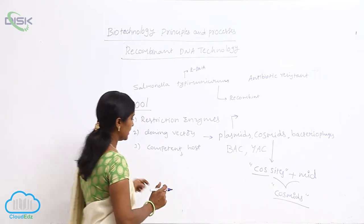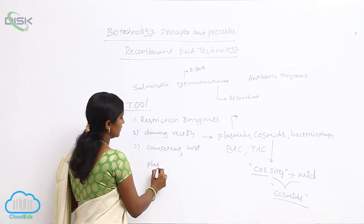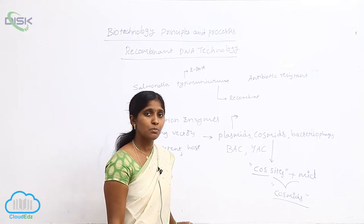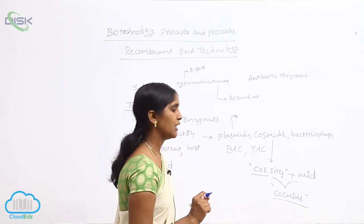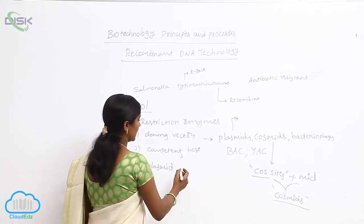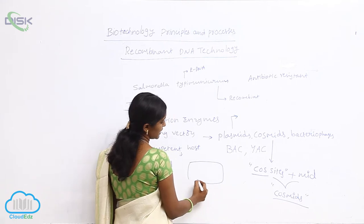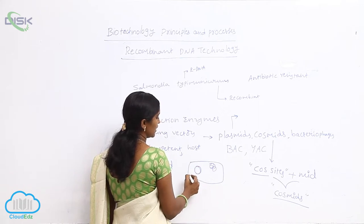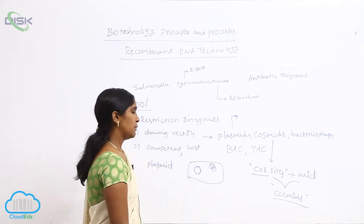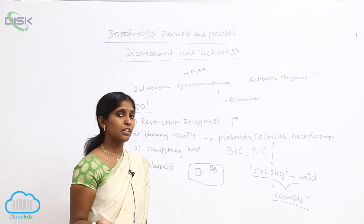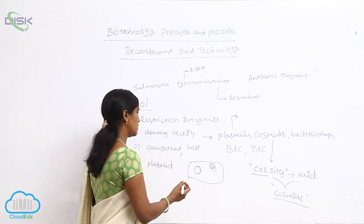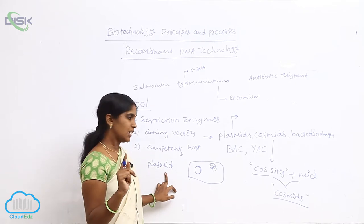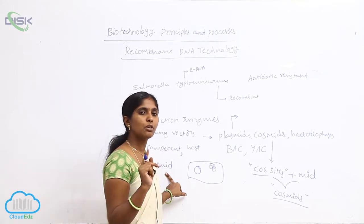A plasmid is a double-stranded circular DNA which is an extranuclear chromosome found in bacteria. In the bacterial cell, the nucleoid is present, and along with the nucleoid, the plasmid — the extranuclear chromosome — is also present. The number of plasmids varies from bacterium to bacterium and species to species. There are two types of plasmids according to their copy number: single copy number plasmids and multiple copy number plasmids.